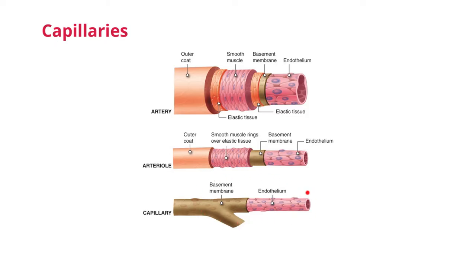Capillaries are the smallest blood vessels in diameter and are also very simple, only containing an endothelium and basement membrane layer. Before we talk about how capillaries exchange substances, let's talk about the three different types of capillaries found in the body.